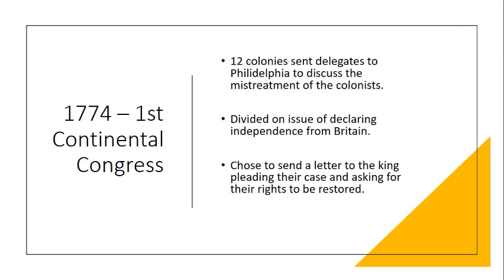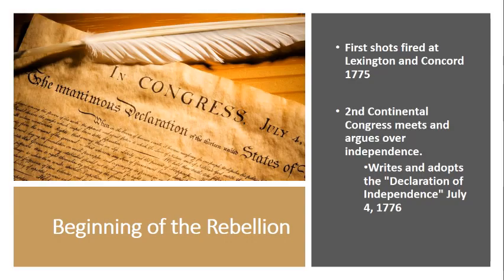In response to the Intolerable Acts, a group of Americans met as the First Continental Congress — you may recognize names like George Washington, Ben Franklin, John Adams, and Thomas Jefferson. They met to discuss what to do about being mistreated and having their rights taken away. Some were ready to declare independence, but most didn't want that yet. So they sent a letter to the King of Britain, pleading their case and asking him to restore their rights as British citizens and treat them fairly and justly. The king pretty much ignored the request and never responded.